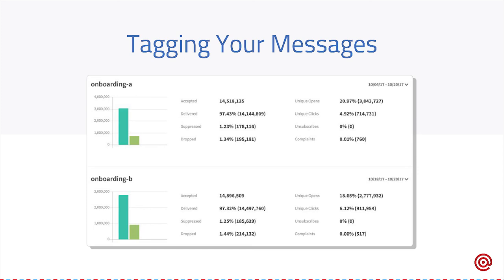However, most people — and marketers specifically — are trying to segment their emails and determine which email is performing better than another. Or maybe if you change the subject slightly, do you get better engagement? This is where our Tags feature comes into play. With tags, you can simply tag or label your emails with a specific name, and then we'll track how those emails are performing specifically. So you can see, for example, that Onboarding A email is performing better than Onboarding B, or in this case it looks like Onboarding B is performing a little bit better on the click side and a little bit worse on the open side.